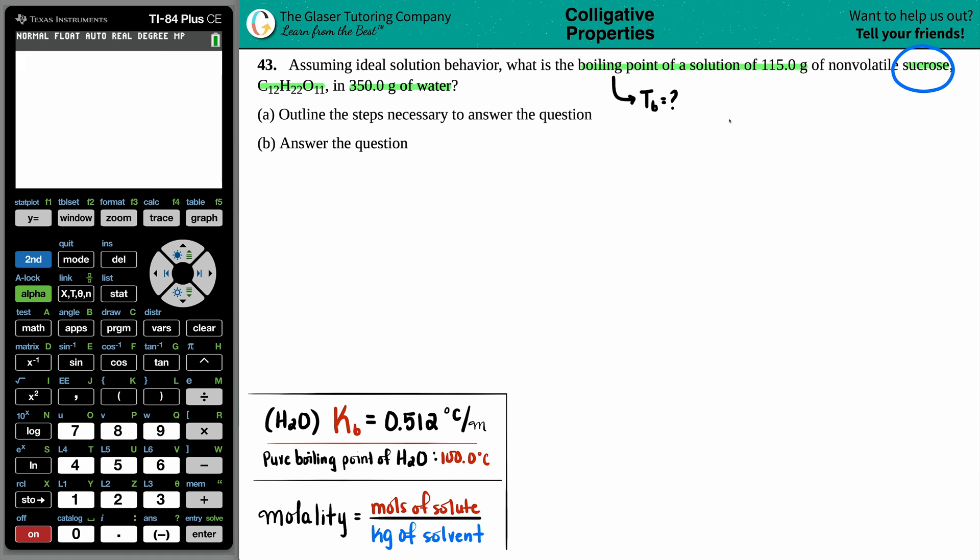Now I notice that we have a solution going on here. We have sucrose being dunked into water. The pure boiling point of water, the solvent, is always 100 degrees Celsius. This is something you should memorize. But by adding the sucrose in it, it's going to change the boiling point a little bit.